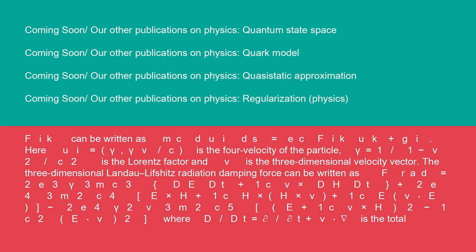The three-dimensional Landau-Lifshitz radiation-damping force can be written as F_rad = (2e²γ)/(3mc³)[d/dt + (1/c)v×](dH/dt) + (2e⁴)/(3m²c⁴)[E×H + (1/c)H×(H×v) + (1/c)E(v·E)] - (2e⁴γ²v)/(3m²c⁵)[E + (1/c)v×H]² - (1/c²)(E·v)², where d/dt = ∂/∂t + v·∇ is the total derivative.